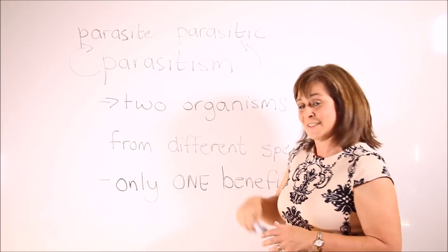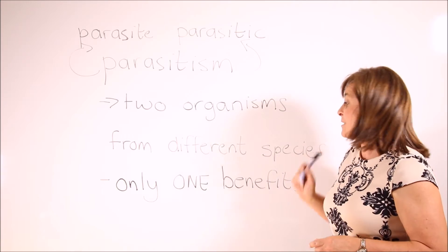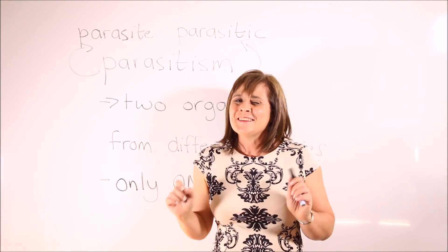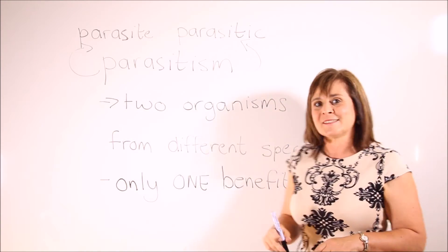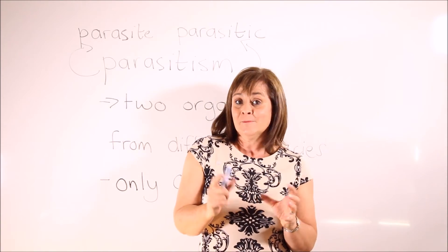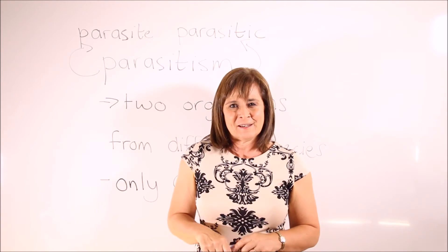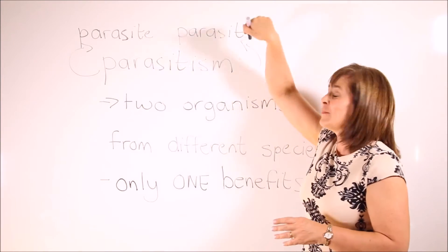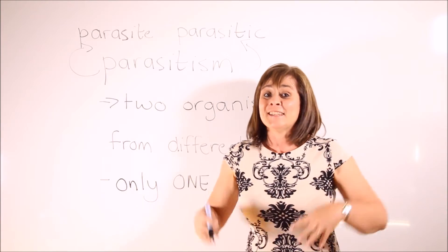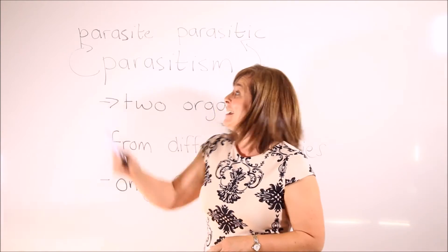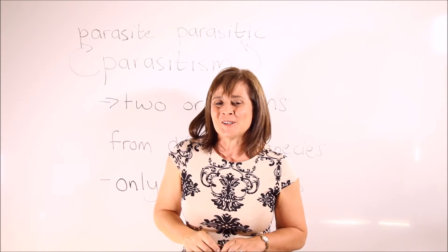The second example of symbiosis is parasitism. Here too we have two organisms from different species living together, but this is not a great relationship because only one party benefits — one organism exploits the other. It feeds off it. We talk about parasitic behavior when one living organism exploits another, and an organism that displays this behavior is called a parasite.